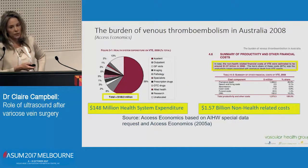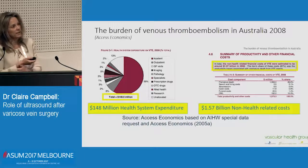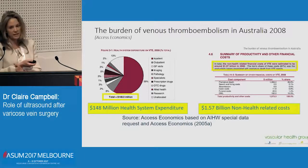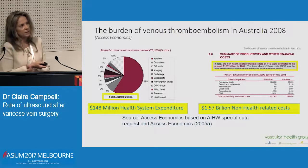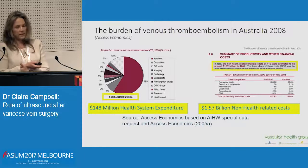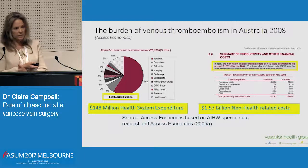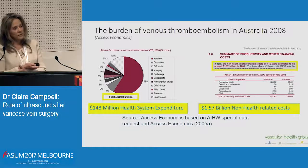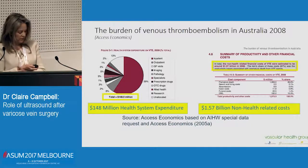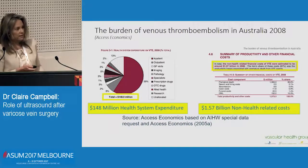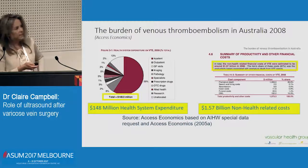If you have a look at the costs of thromboembolism — this is an analysis done by Access Economics looking at data from 2008 — you can see the expenses are enormous. The health system expenditure is $148 million and then the non-health related costs $1.57 billion.